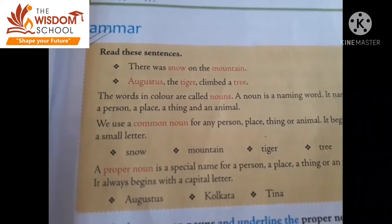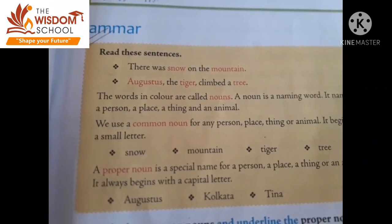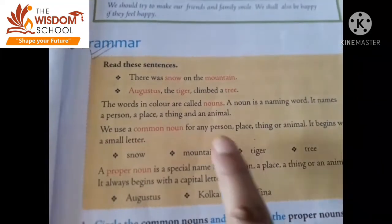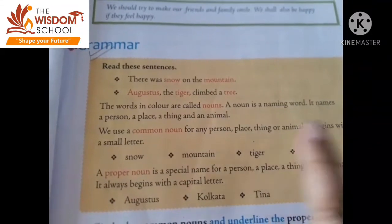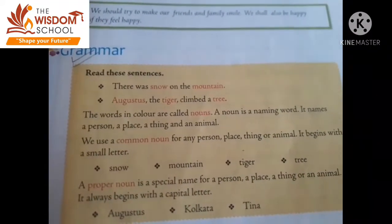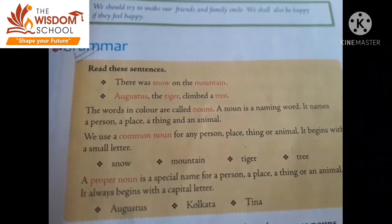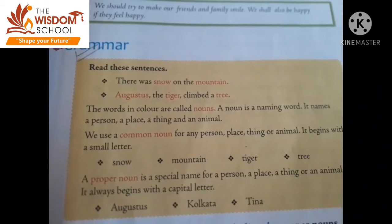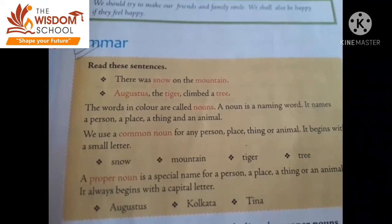We use a common noun for any person, place, thing, aur animal. Kisi bhi person, place, thing aur animal ke hum common noun use karte hain. It begins with a small letter — yeh small letter se start hoti hai. Like, jo snow hai, mountain hai, tiger hai, tree hai — yeh sab common noun hain.